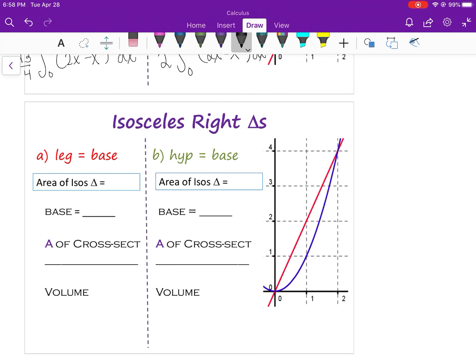All right. Isosceles right triangles. So the first one we looked at was where the leg and the base were the same. So that was one half of the base squared. And again, we have the same base, so we're going to plug that in. And our volume is going to be one half, two X minus X squared, squared DX from zero to two.